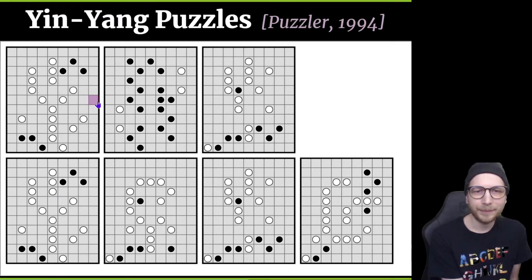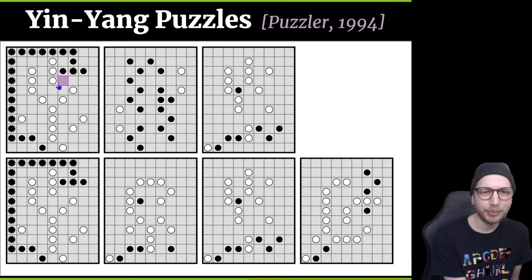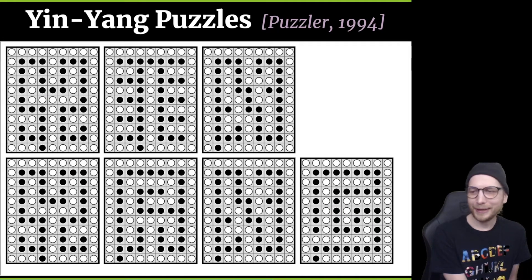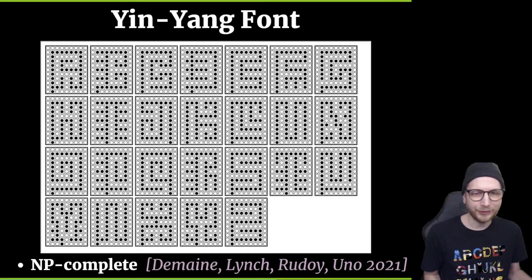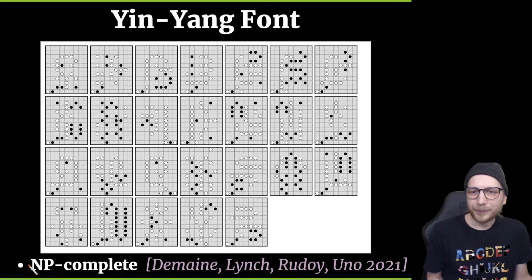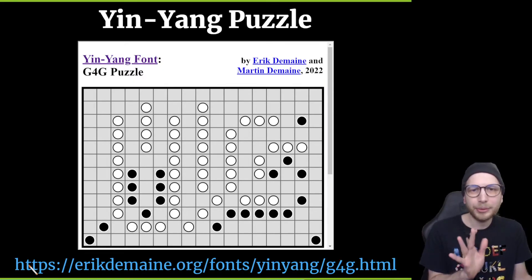Onto the next puzzle font: yin yang puzzles. The goal is to connect together all of the black pixels and all of the white pixels, but you're not allowed to make a two-by-two monochromatic square. This solves to 'yin yang' — if you look at it from far away, it happens to be unique. All of these letters are designed to be uniquely solvable. This is also paired with an NP-completeness result. We wrote a program to remove clues until the puzzle was just barely uniquely solvable, and we hand-chose the hardest versions. You can also join two letters together into a single puzzle, as done for this conference. You can try it online.